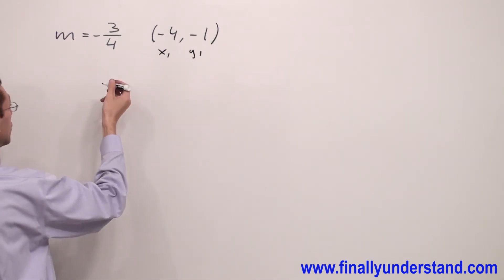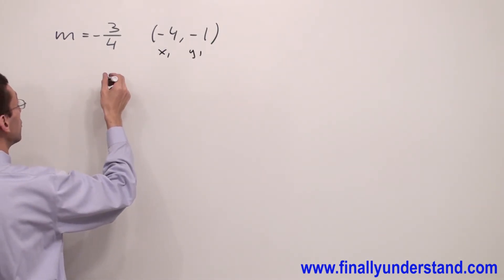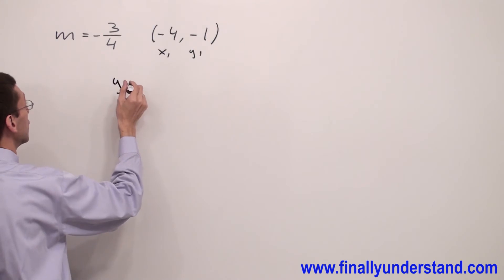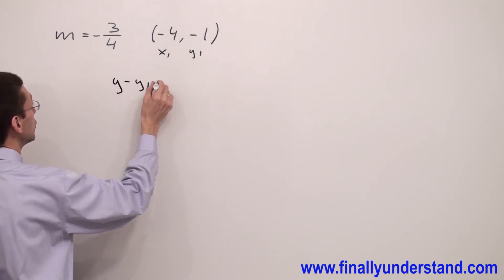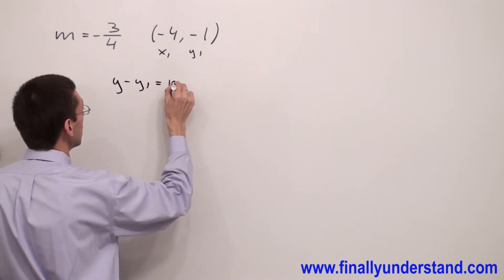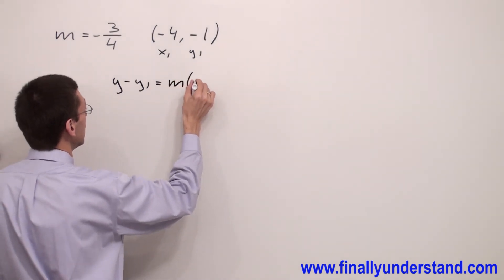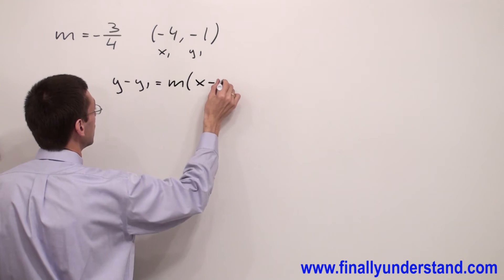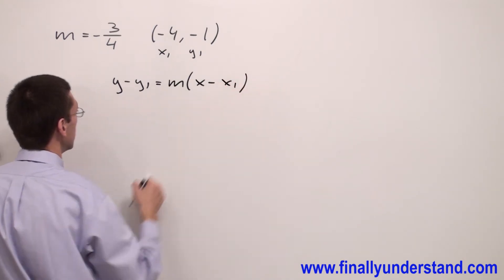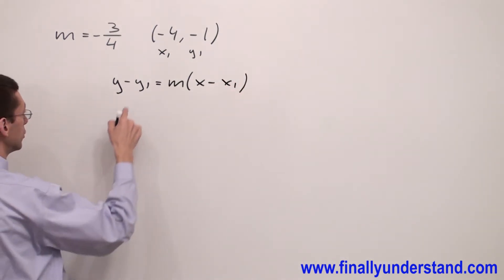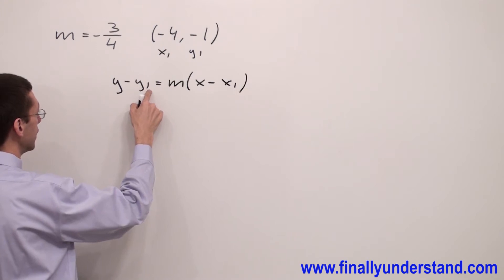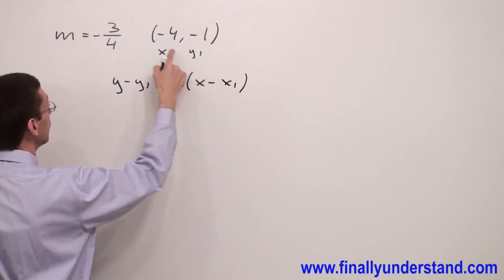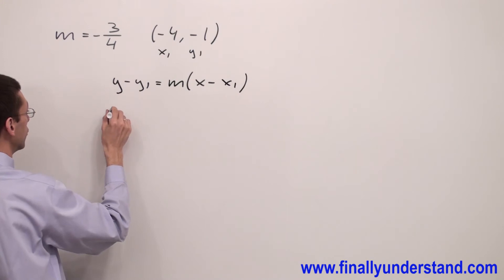I'm going to use the formula for point-slope form, which is looking like this: y minus y1 is equal to slope times x minus x1. Next, I have to substitute y1, slope, and x1 by these values.